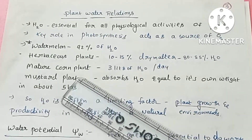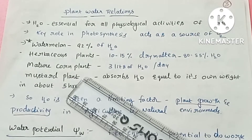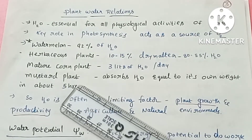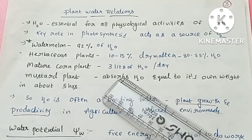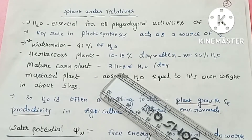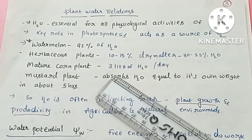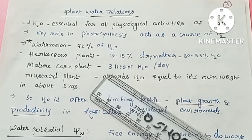Next, mature corn plants. A mature corn plant absorbs 3 liters of water per day. A lack of water means reduced growth and productivity.